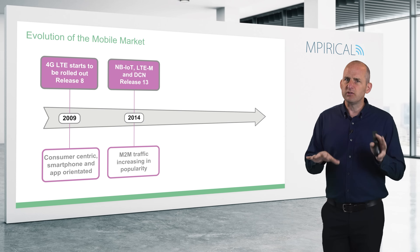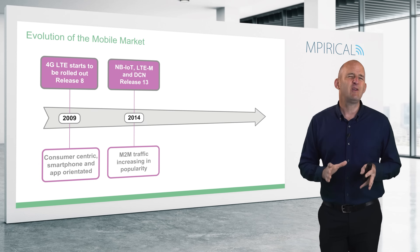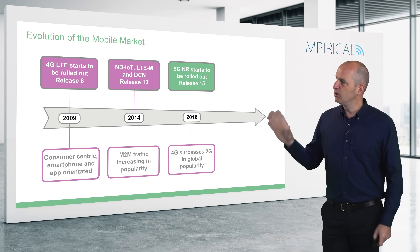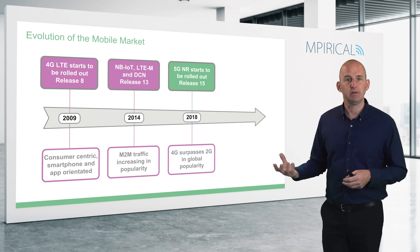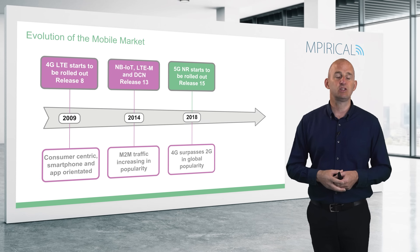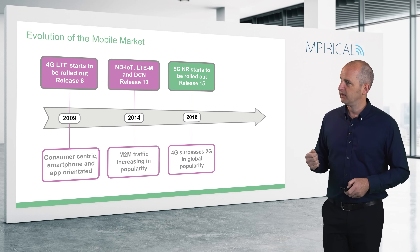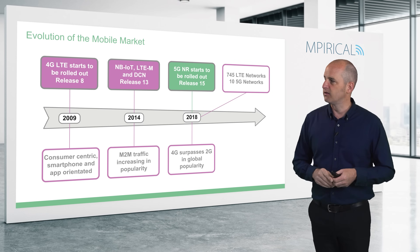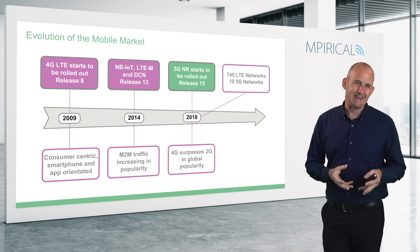In about the 2014 timeframe we saw machine-to-machine traffic rising quite considerably, though we'd already seen it extensively in 2G and 3G. It was in 2018 that 4G surpassed 2G as the most popular cellular technology. Coincidentally, it was also about 2018 where we started to see the initial first deployments of non-standalone 5G — 5G New Radio — around release 15. At that time, towards the end of 2018, we had 745 LTE networks compared to just 10 5G networks.